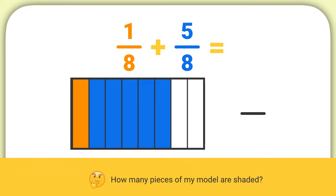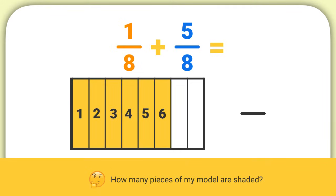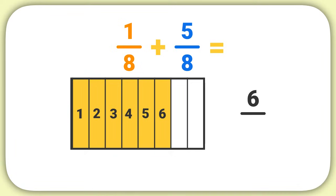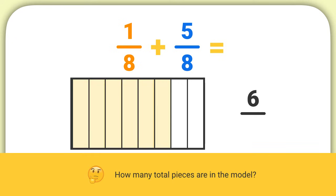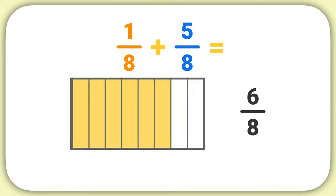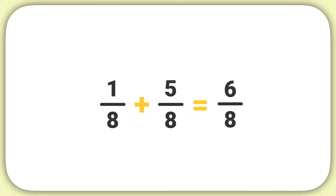Well, how many pieces of my model are shaded? You can count that there are six total pieces shaded, so the numerator of my fraction is six. Now how many total pieces are in the model? There are a total of eight pieces in this model, so my denominator will be eight. And now I have my answer: one-eighth plus five-eighths equals six-eighths.